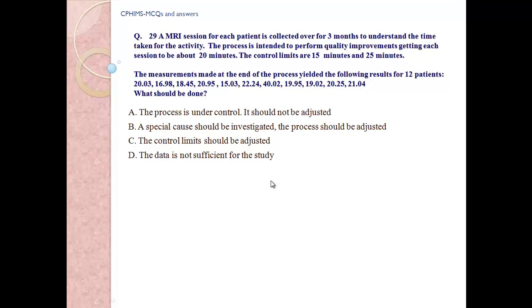Options: A) The process is under control and should not be adjusted. B) A special cause should be investigated and the process should be adjusted. C) The control limits should be adjusted. D) The data is not sufficient for the study. Answer B: There are data points which fall outside the control limits — specifically 2.03 and 40.02 — which warrant investigation.